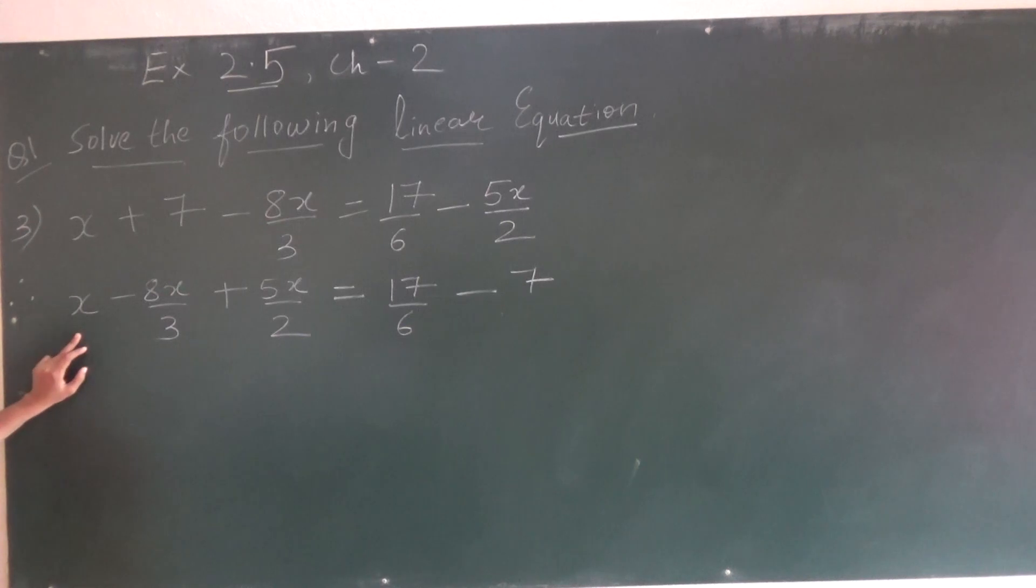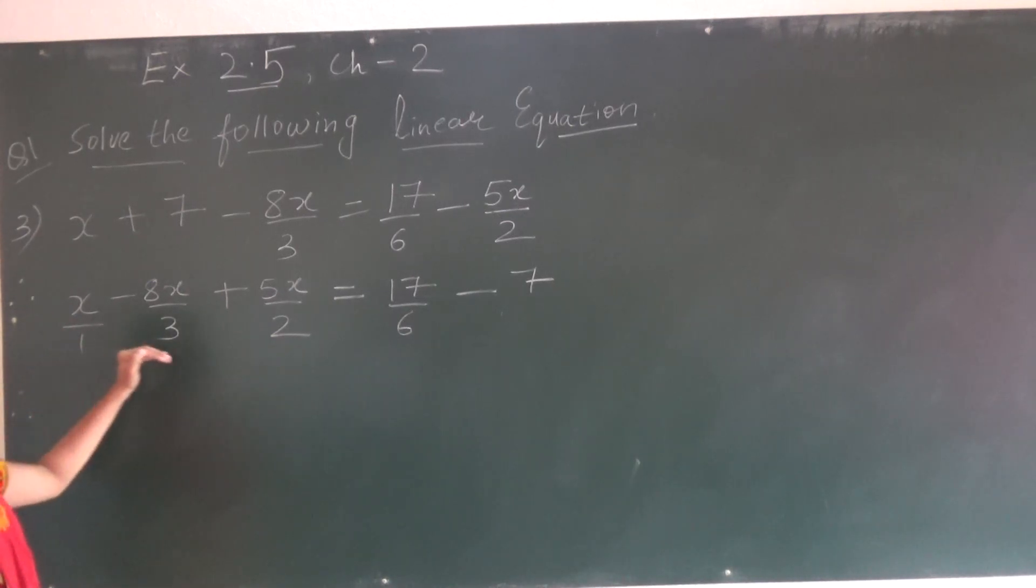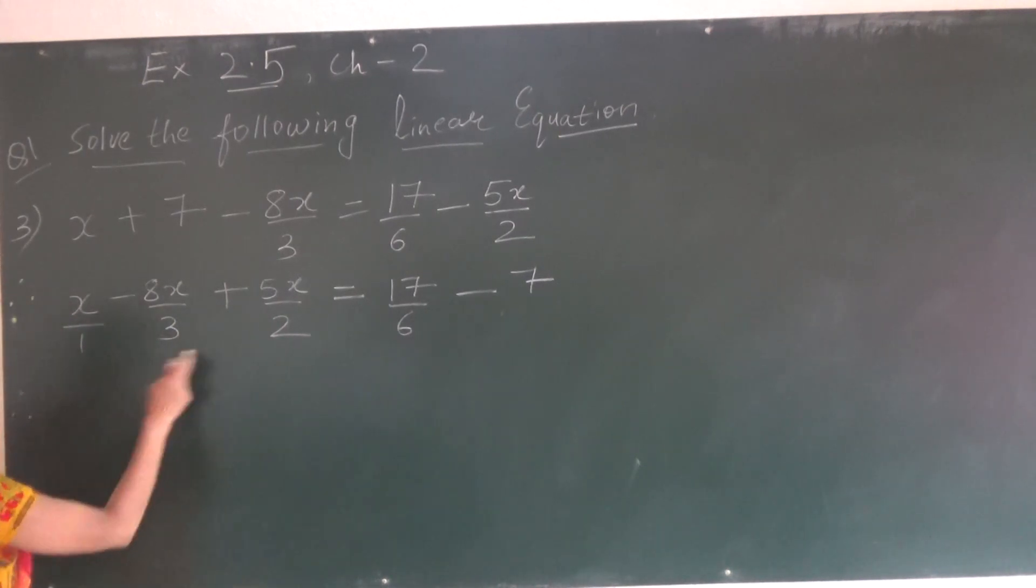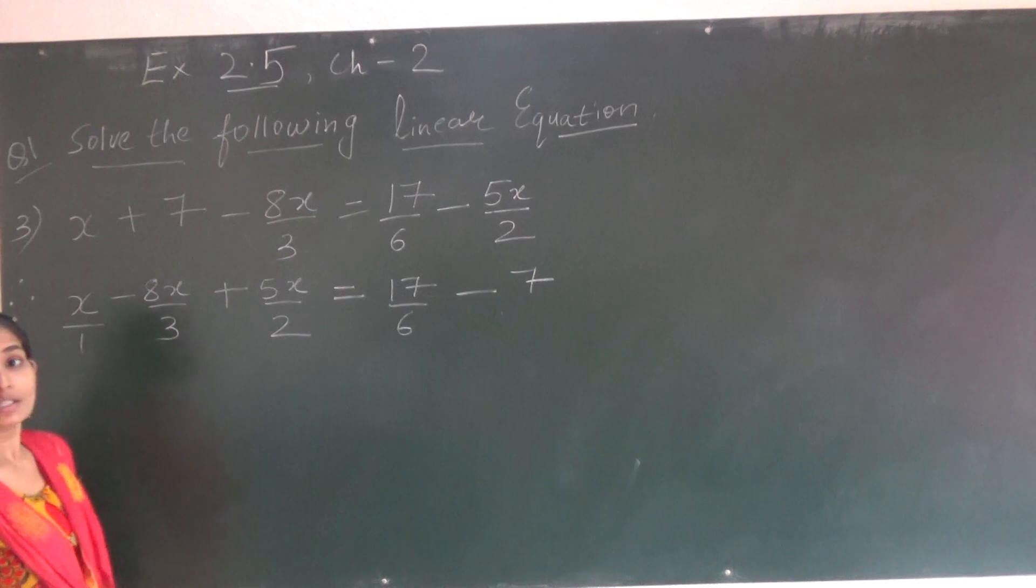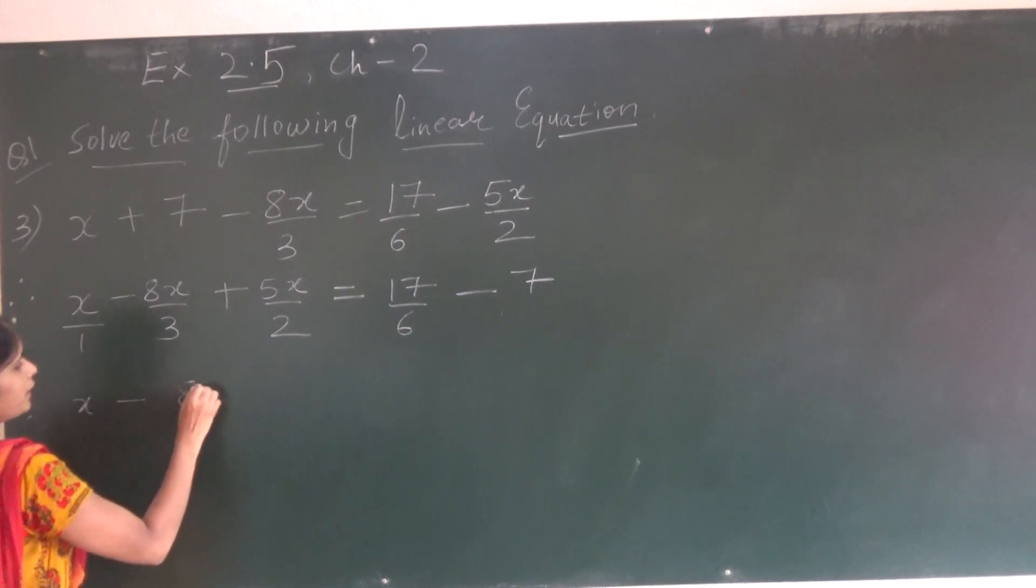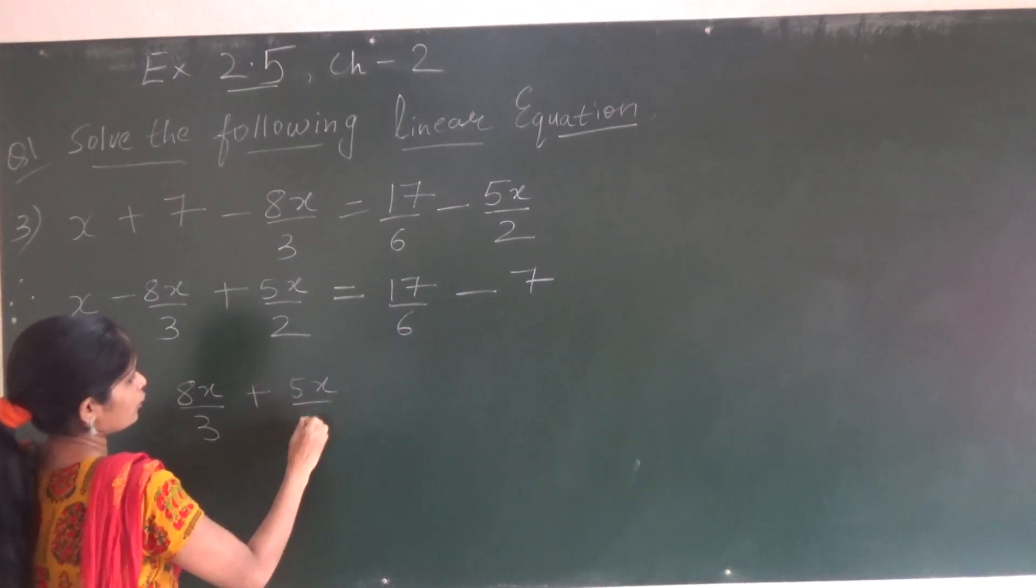First of all, here there is no denominator, so you can write upon 1. Now we will take LCM of 1, 3 and 2. So LCM of 1, 3 and 2 or 3 and 2 will be 6. This you can do oral LCM of 3 and 2 will be 6. Or you can show the method also. It will be 6.